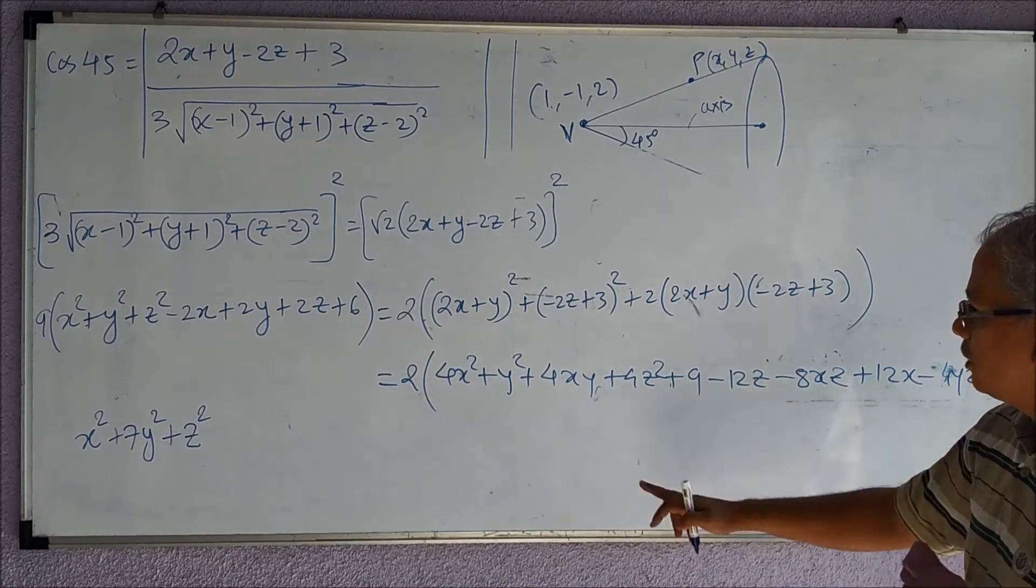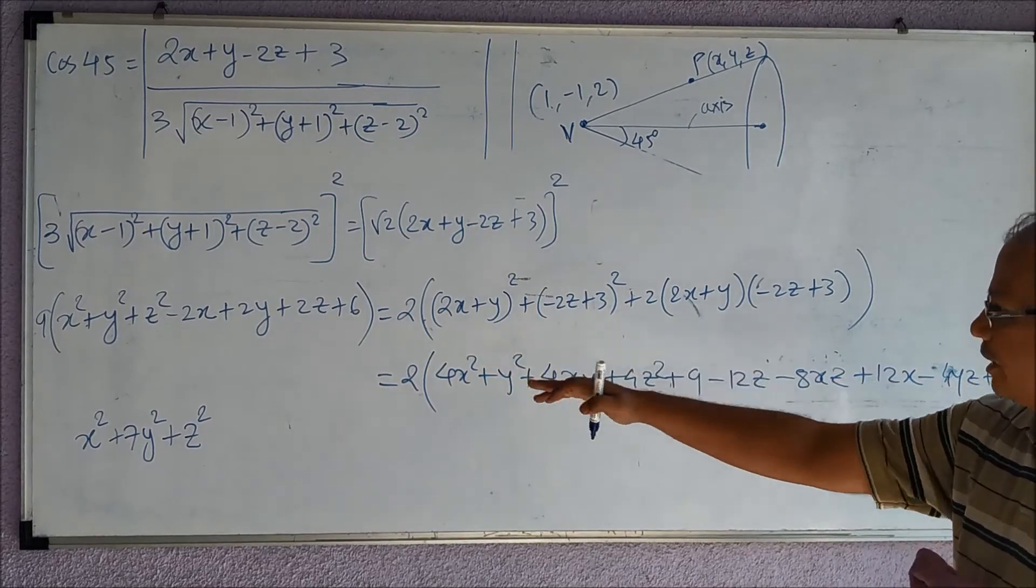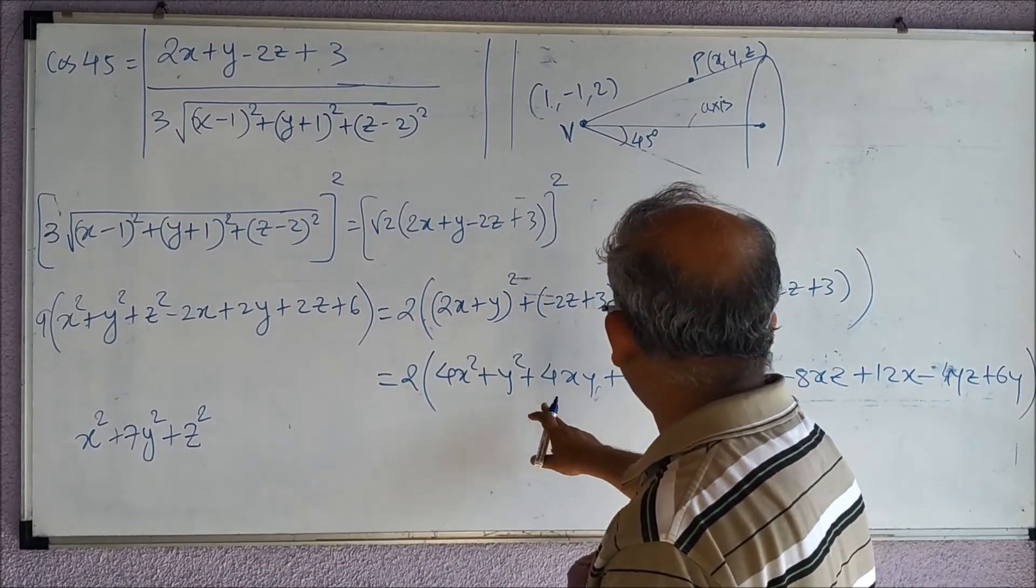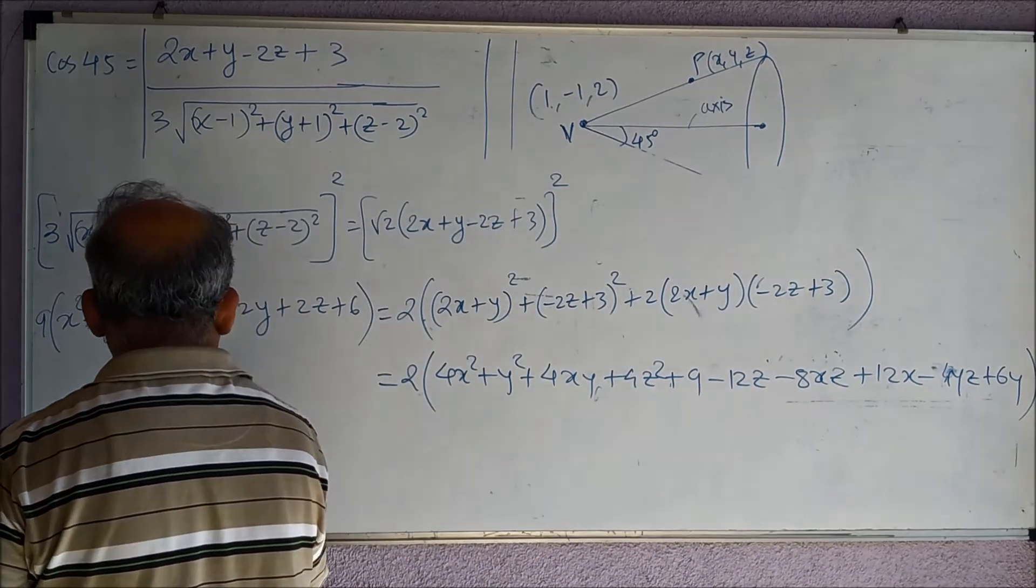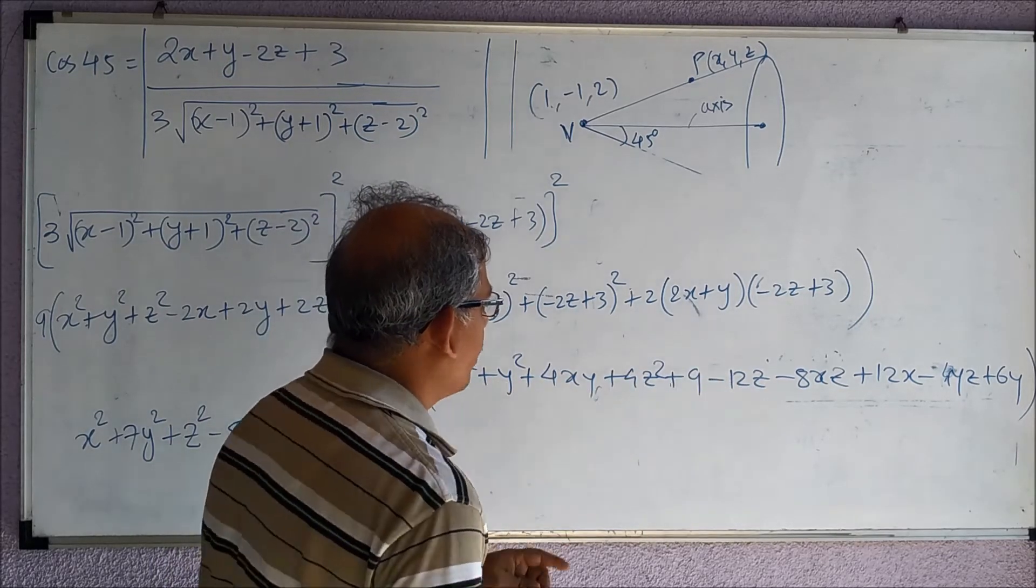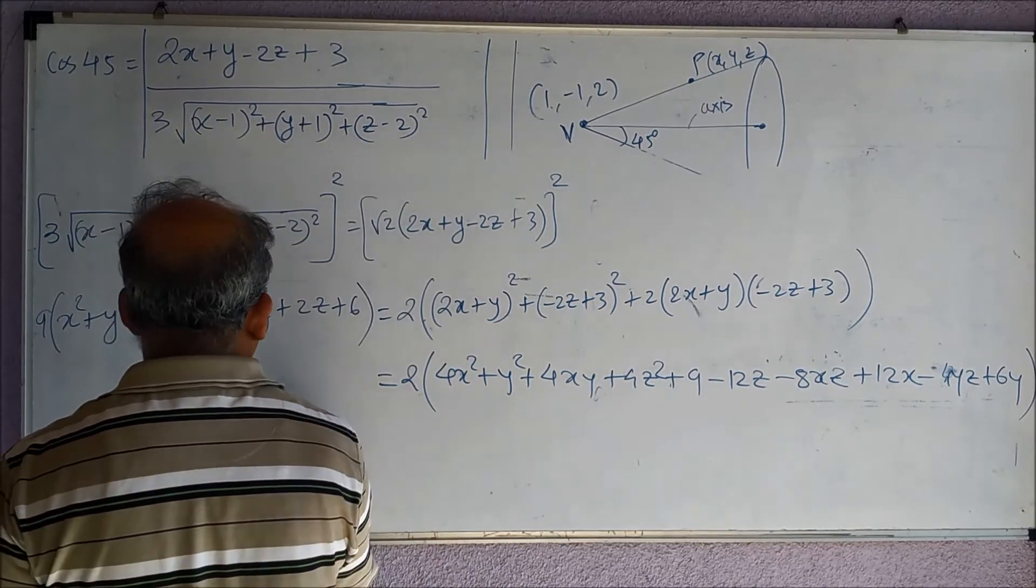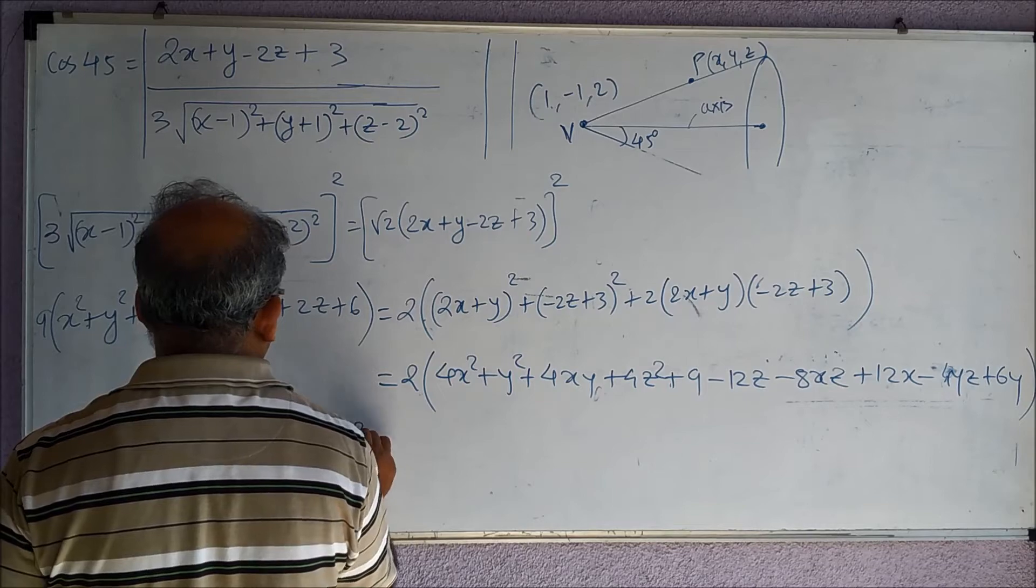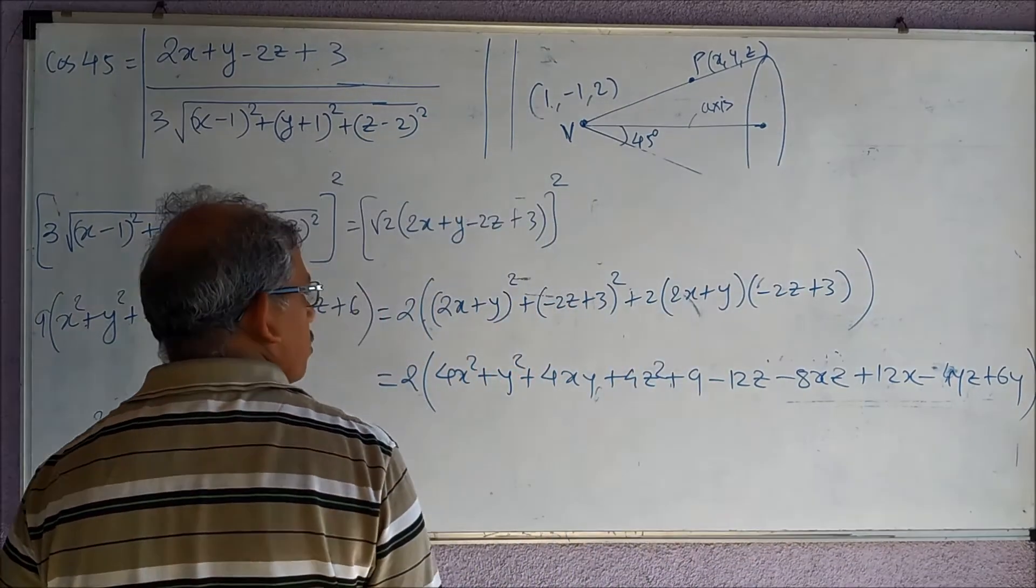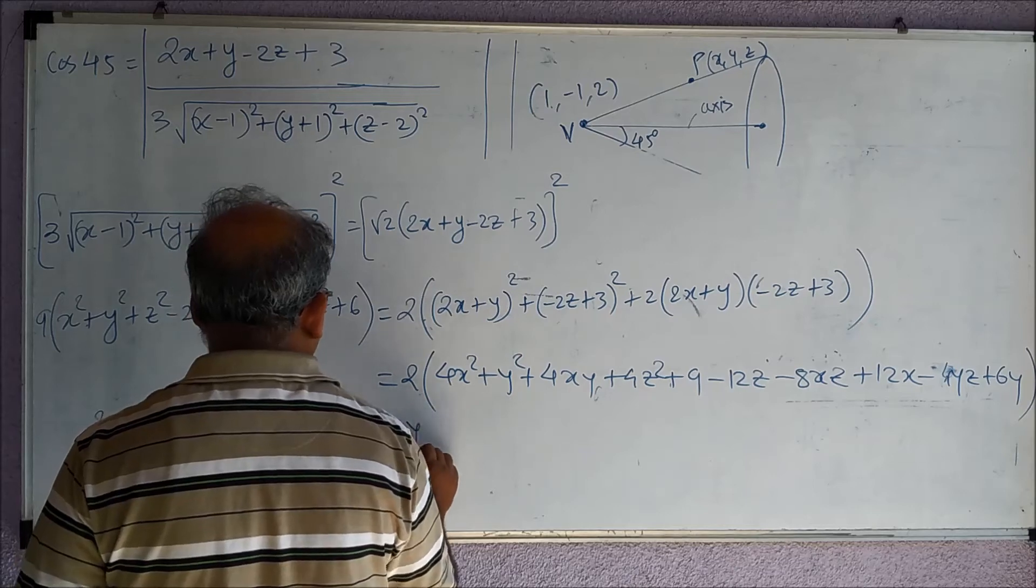So this is 8xy, then the term of xz, so plus 16xz, then the term of yz, that is plus 8yz.